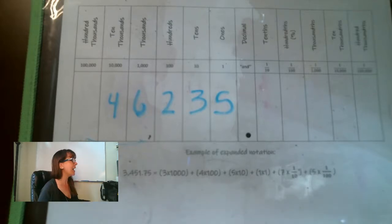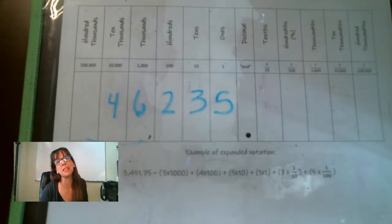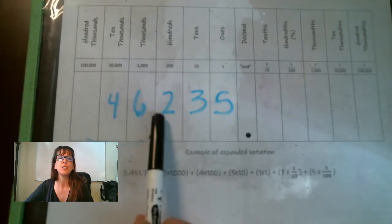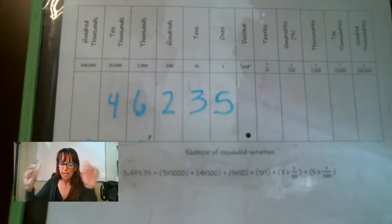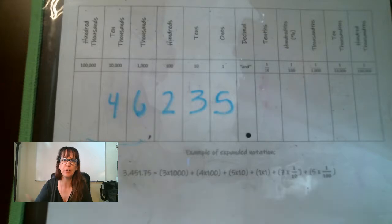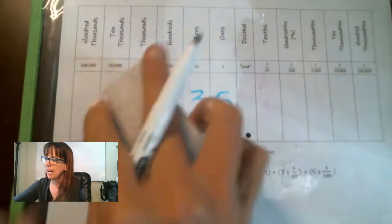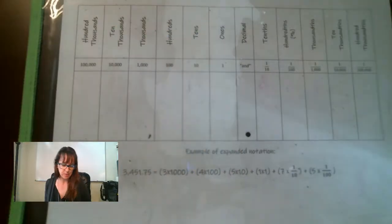The word 'and' in math actually means the decimal place. So you'll hear me, I make this mistake all the time, as I know a lot of adults do. You'll hear me say 235, incorrect. So 46,235, that's how we would go about saying those.